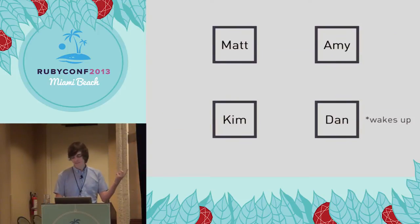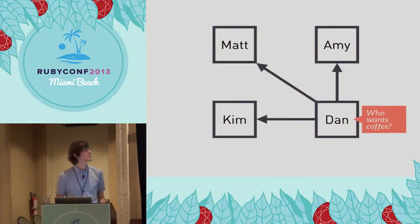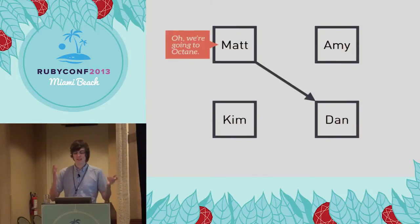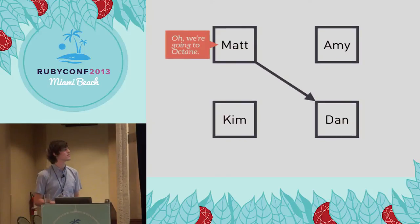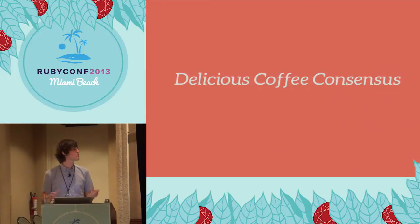Dan wakes up and frantically wants coffee, and he doesn't look at his phone at all. He just sends out a message to everyone: 'I need coffee right now.' But Matt's already like, 'Well, we already made a decision. We're going to Octane. You can meet us there.' Pretty normal coffee situation — or if you've tried to schedule beer with other people, it's pretty normal.